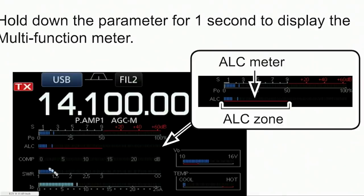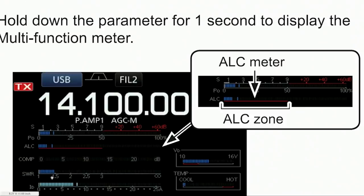Also take note that in this particular situation the SWR is about 1.4 to 1, and that can affect the ALC reading. So when adjusting the mic gain, the SWR really should be in the neighborhood of preferably 1.5 to 1 or less.